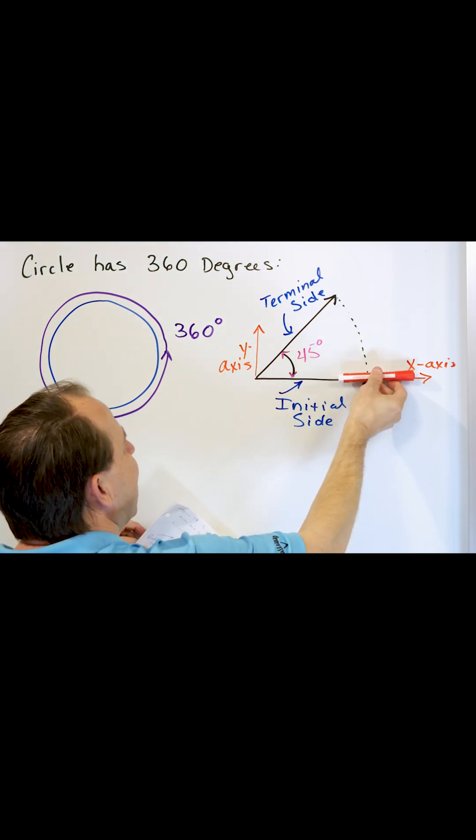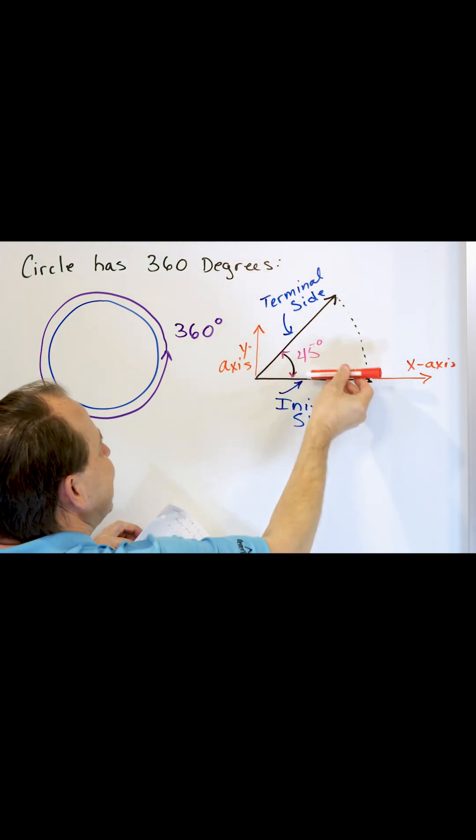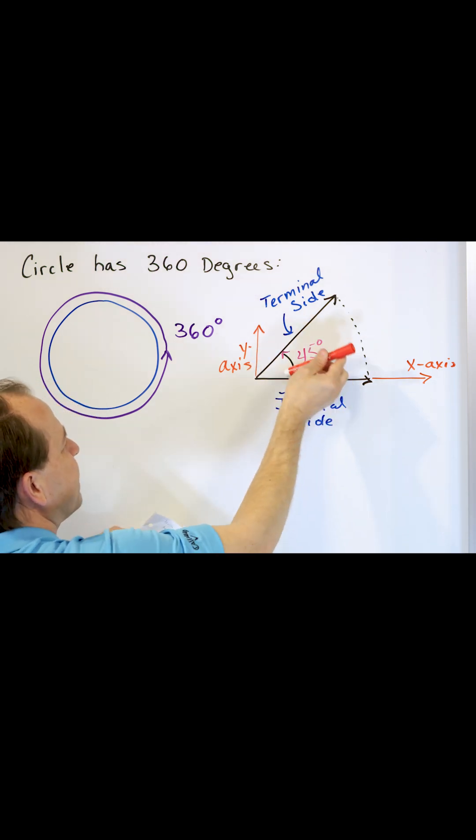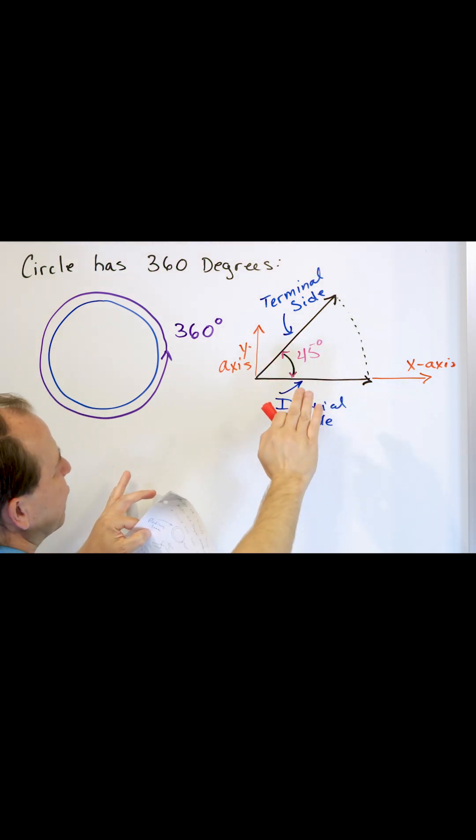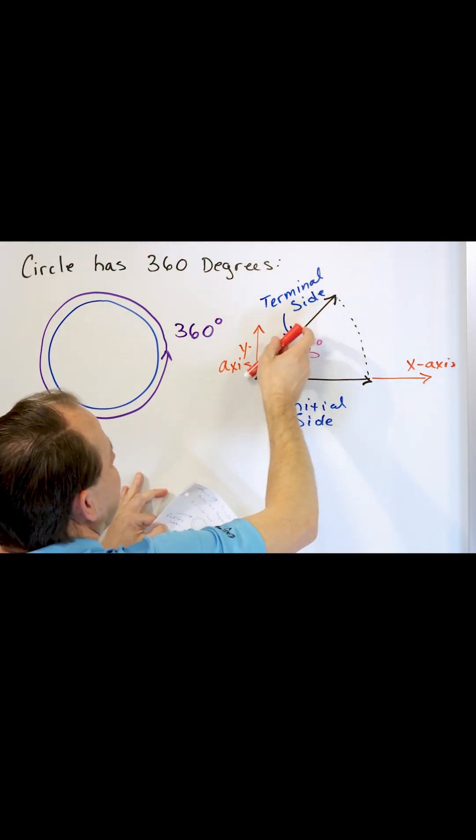So going from the x-axis to the y-axis, this is 90 degrees. And about halfway through there, we stopped—roughly halfway, I mean I'm not exact in my drawing here. So this is half of 90, which makes this about 45 degrees.